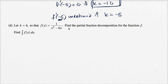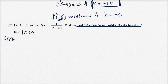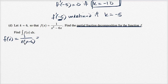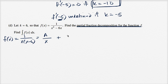Let's first think about the partial fraction decomposition for the function f. I could rewrite f of x by factoring the denominator. If I factor out an x, I get x times x minus six. So I can decompose it into partial fractions: A over x plus B over x minus six.